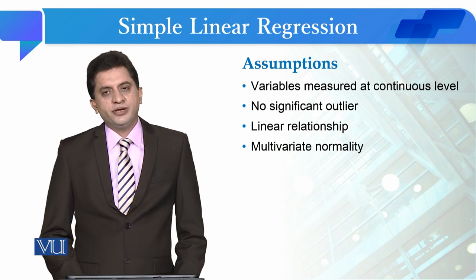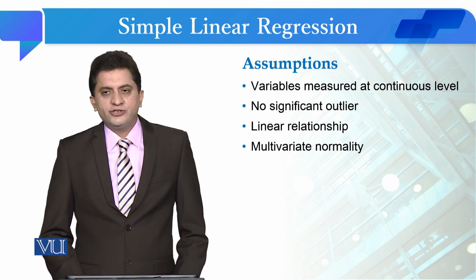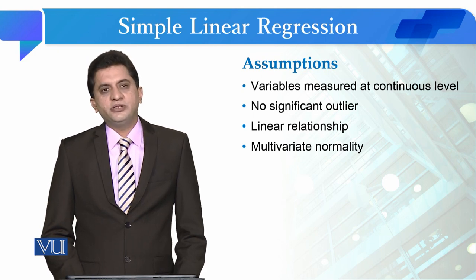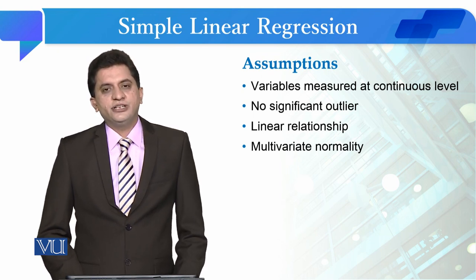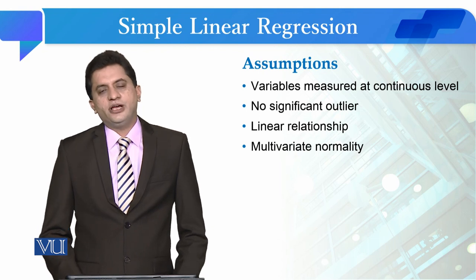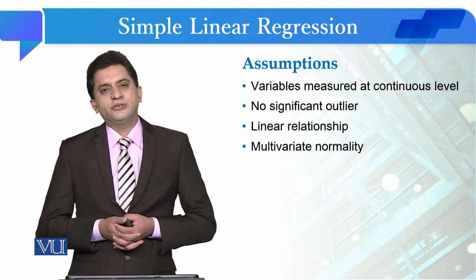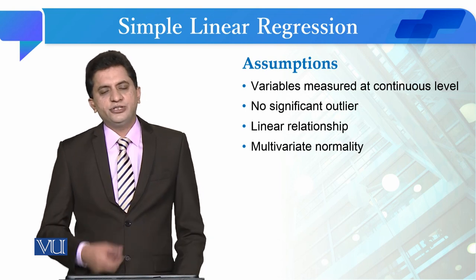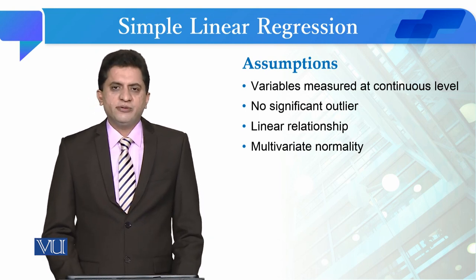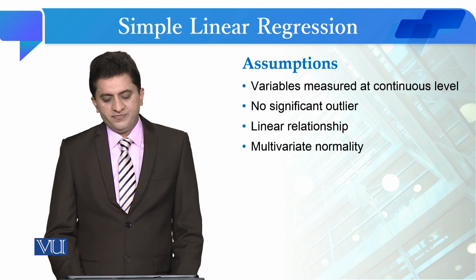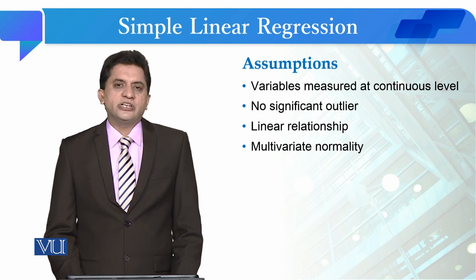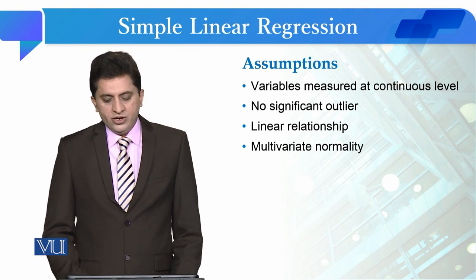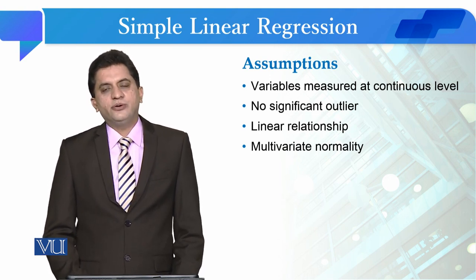The assumptions for linear regression are: both variables should be at the continuous level and normally distributed. There should be no significant outliers in either variable — an outlier being a significant extreme value away from the majority of the data. Also, if a scatter plot is made of both variables, a linear relationship should be visible.